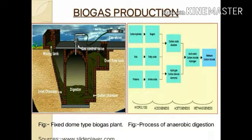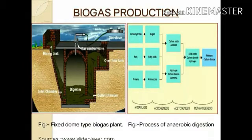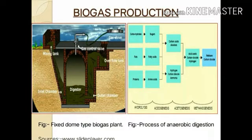In the digester tank, four processes occur: hydrolysis, acidogenesis, acetogenesis, and methanogenesis. These stages all occur anaerobically, in the absence of oxygen. After completing all these stages, biogas or methane is produced.